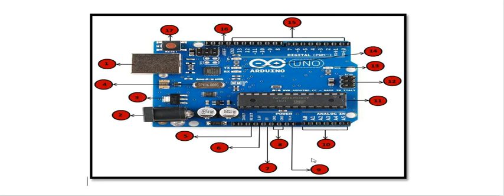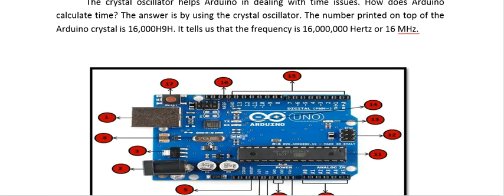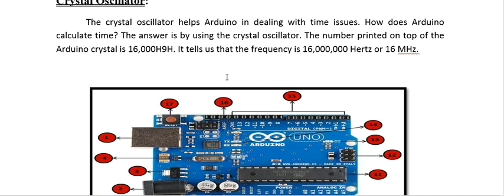Fourth: Crystal Oscillator. The crystal oscillator helps Arduino in dealing with time issues — it is how Arduino calculates time. The number printed on the top of the crystal oscillator is 16009H, which tells us that the frequency is 16 megahertz.